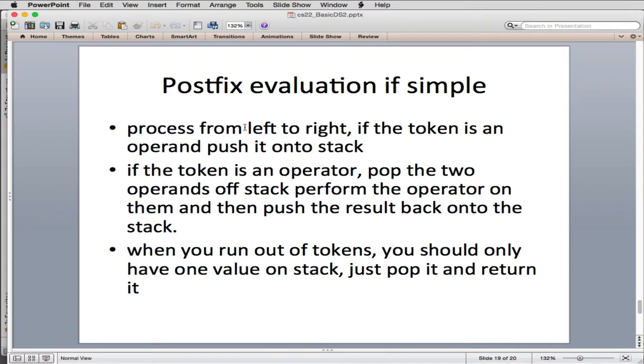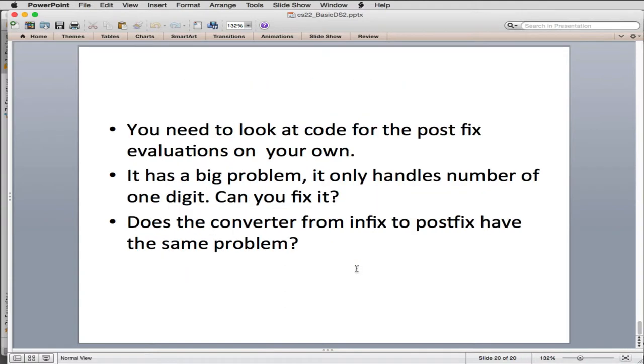So, we want to process our expression from left to right, so we're going to be given a postfix expression, and if the token is an operand, we just push that operand on the stack. If the token is an operator, we pop the last two operands off the stack and perform the operator on them, and then push the result back on the stack. When we run out of tokens, there should only be one value on the stack, and we just pop that and return it. So, it's actually a very simple algorithm. I'm going to let you look at the code in the book. So, you need to look at the code on your own.